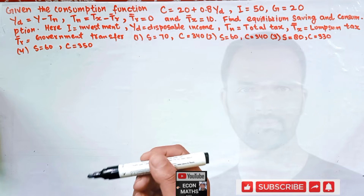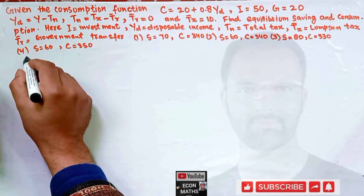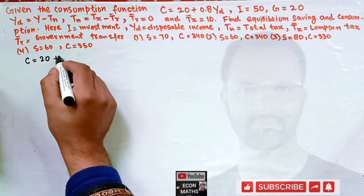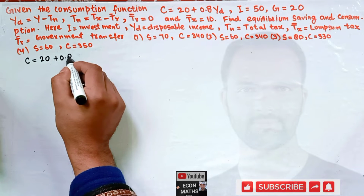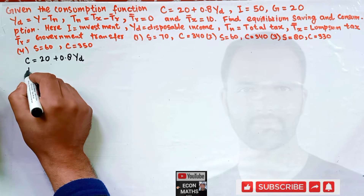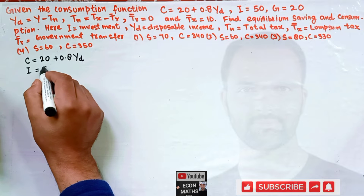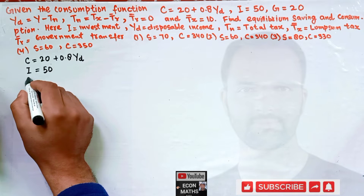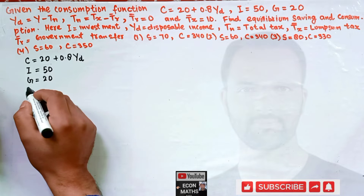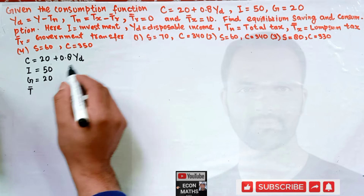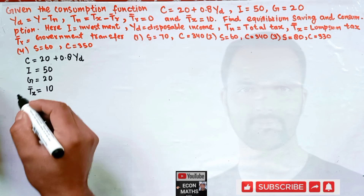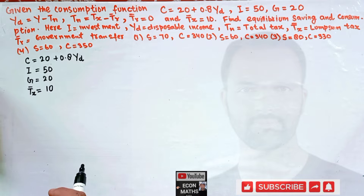So let's restate what we are given. The consumption function is C = 20 + 0.8·Yd. Investment I = 50. Government expenditure G = 20. And the lump sum tax TX̄ = 10.